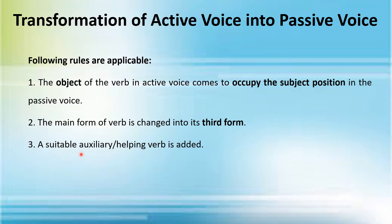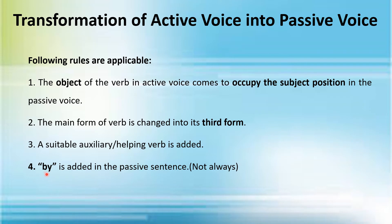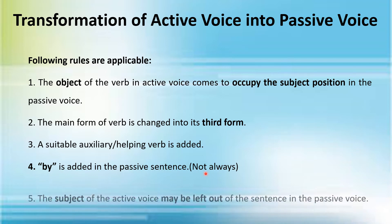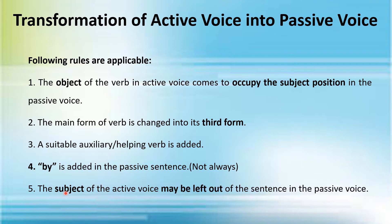Number three: a suitable auxiliary or helping verb is added. Number four: 'by' is added in the passive sentence, but not always — I'll explain this with the help of examples. Number five: the subject of the active voice may be left out of the sentence in the passive voice. This case is applicable in some sentences and I shall help you understand this point as well.